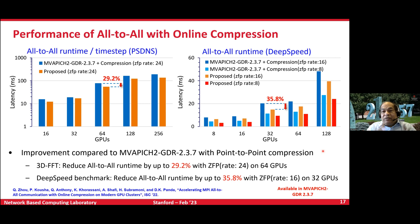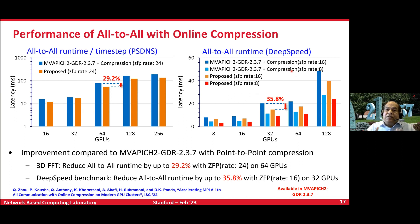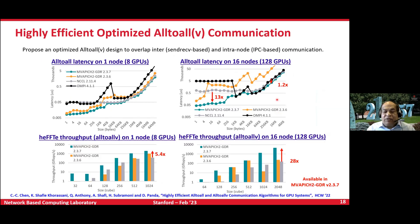We have also brought compression designs to the collectives level. For all-to-all with online compression, presented last year at ICS, the PSDNS application shows 30% reduction in overall execution time. For deep speed's deep learning recommendation model using all-to-all, we reduce execution time by 35%. We've also done optimized all-to-V, which is more complex, and show performance acceleration across different system sizes using the Hefty library. All these are available in the latest release of MVAPICH2-GDR.